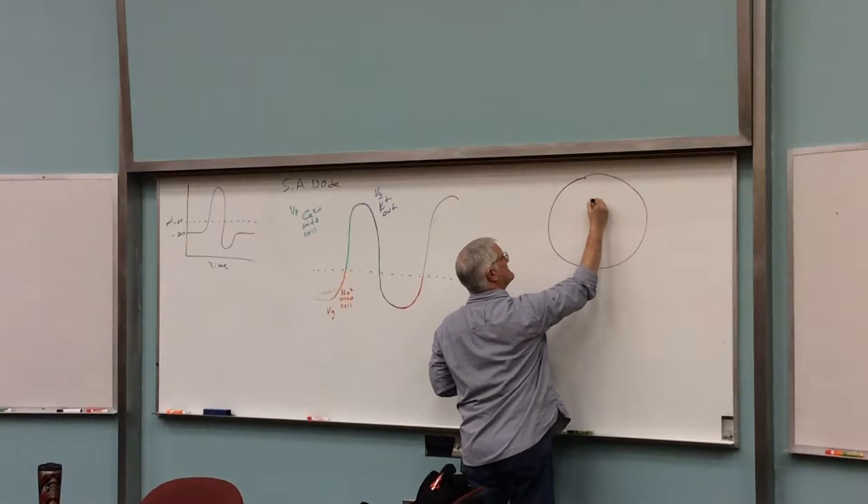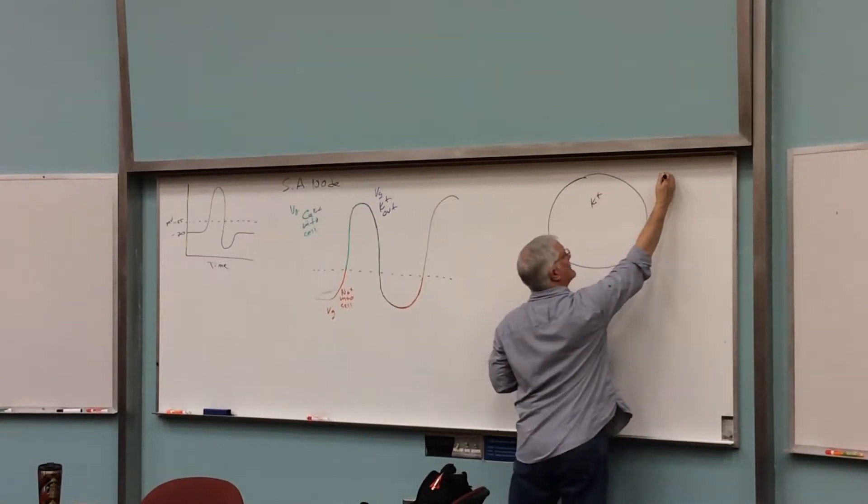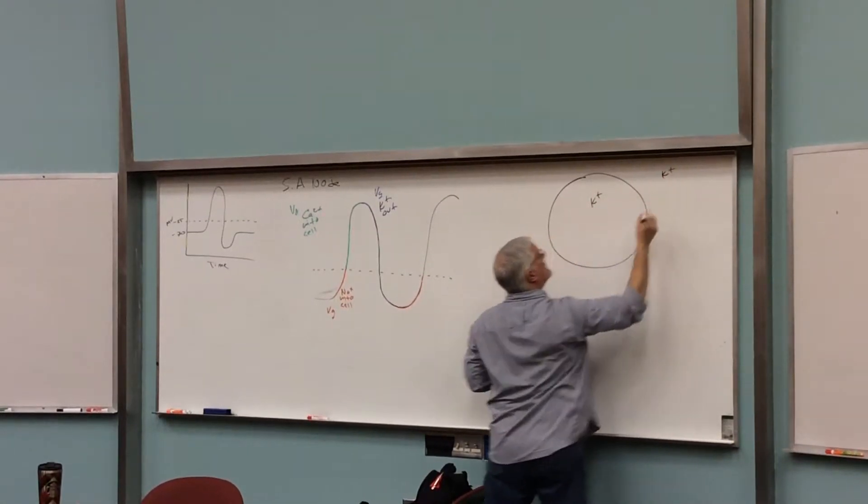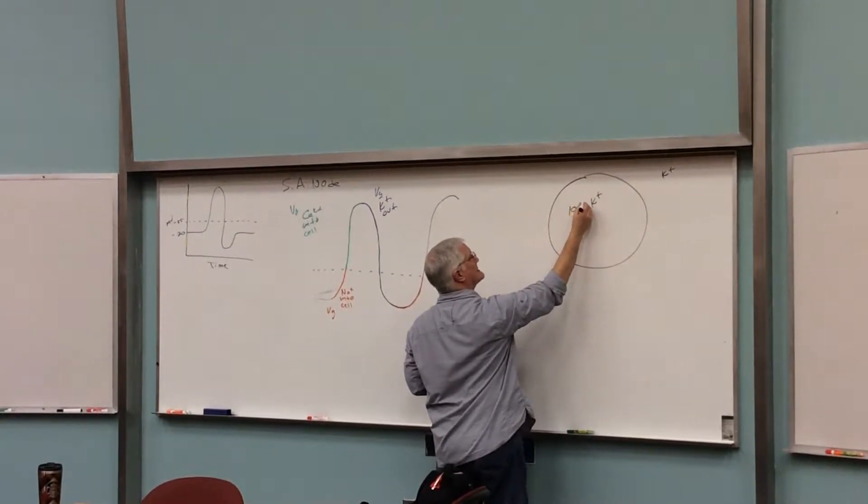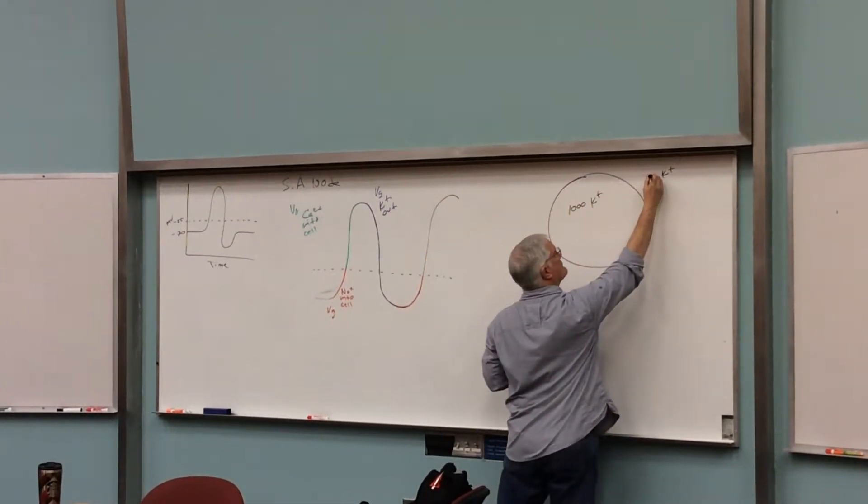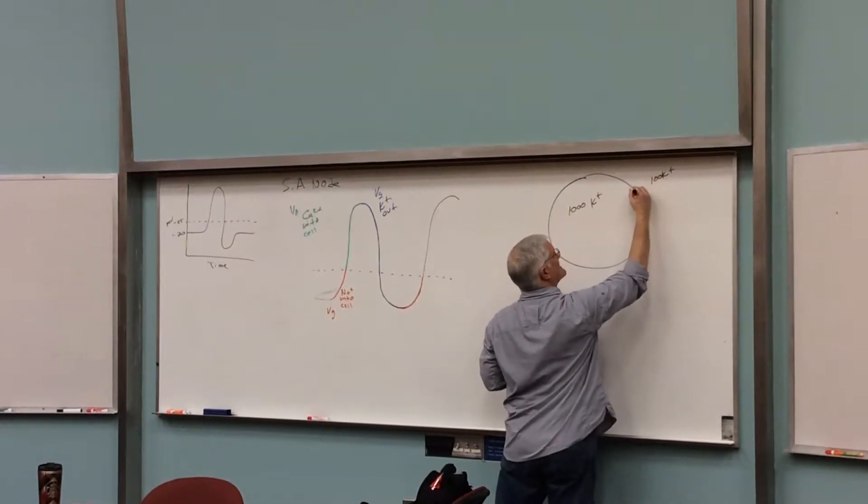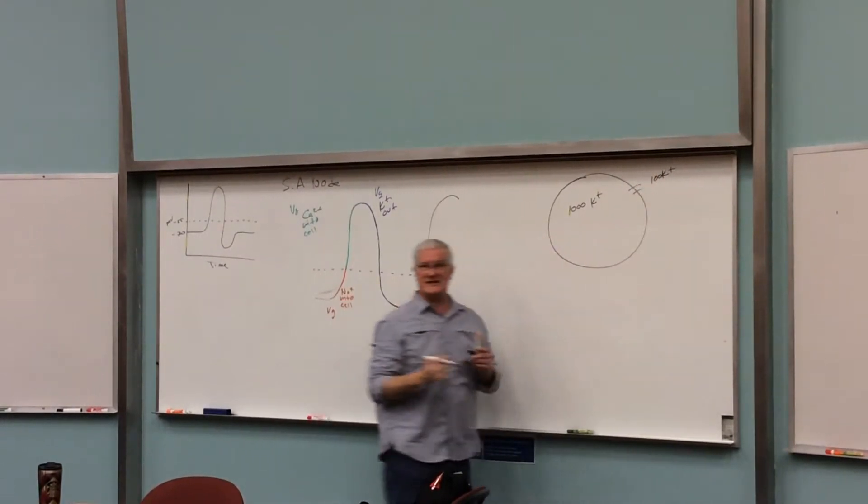We know there's way more potassium inside of a cell than there is outside of a cell. Let's pretend we have 1,000 potassium ions inside, and let's say we have normally 100 potassium ions outside. Let's say that's normal.